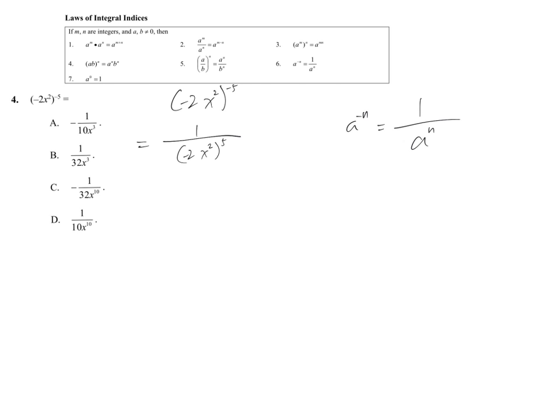So after that, I just focus on this part. Since ab, two things to the power of 5 should equal to a to the power of 5, and also b to the power of 5. That's why it becomes something to the power of 5, something to the power of 5, which is negative 2 and x to the power of 2.